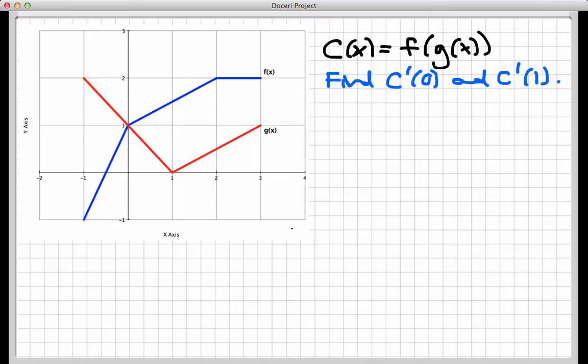Now how can I do this without formulas? Well, I do have one formula that lets me do all of this, and that's just the formula for the chain rule itself. Let's think about how we would do this. We're being asked to find the derivative of c at 0 and the derivative of c at 1. Let's come up with a formula that gives me the derivative of c at x, just for any x whatsoever. I can do that because I know that c is a composite function.